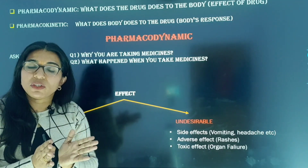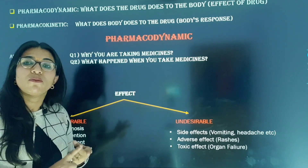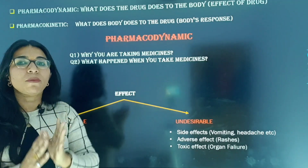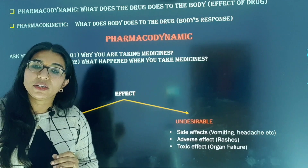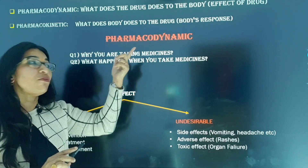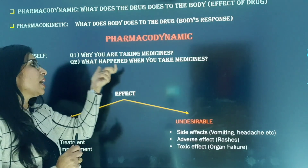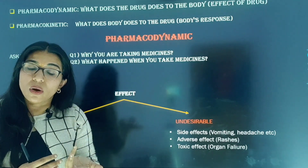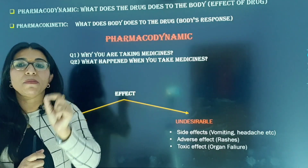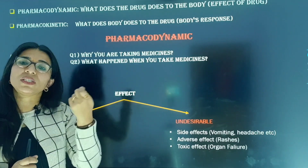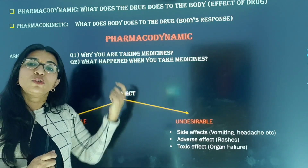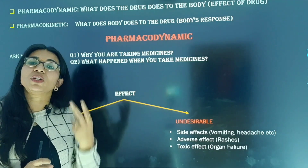In pharmacodynamics, whenever we take any medicine, two things should come to mind and we should ask: why are we taking this medicine, and what happens when you take the medicine — what effect is produced? The answer to the first question is: you are sick, your health is poor, you have some disease — that is why you took the drug. When you take the drug, it produces an action on your body. That effect will always be of two types: desirable and undesirable.